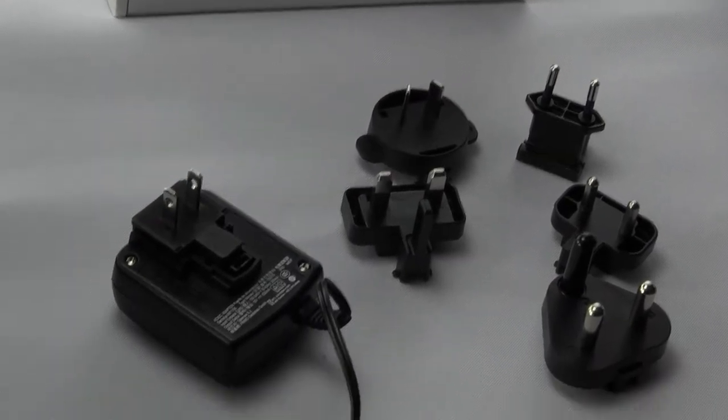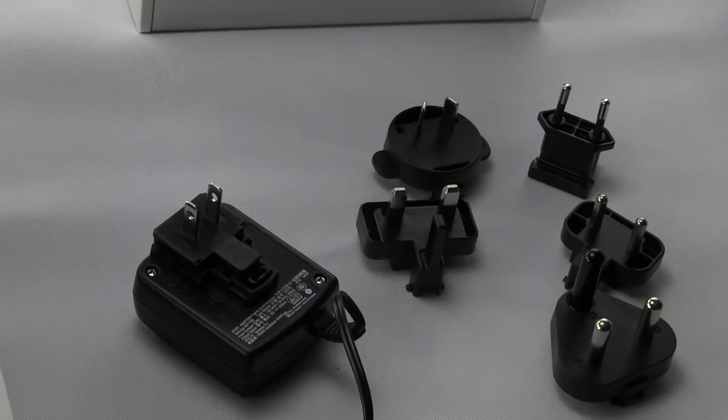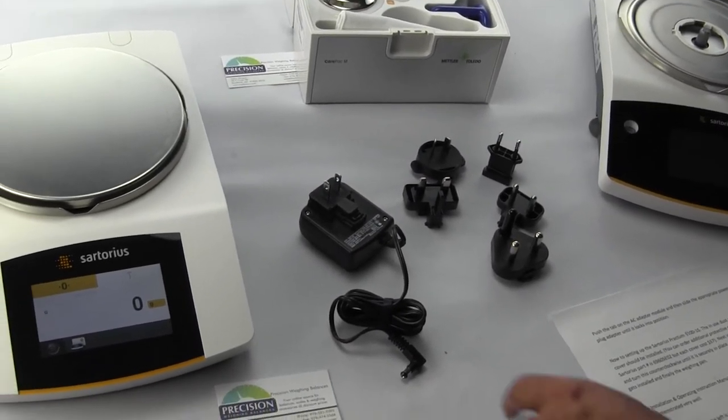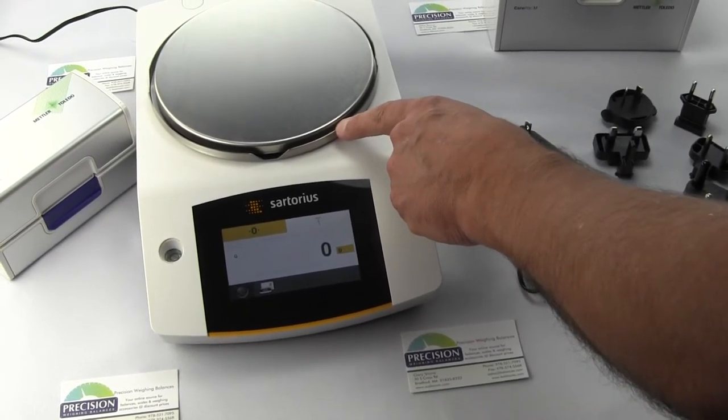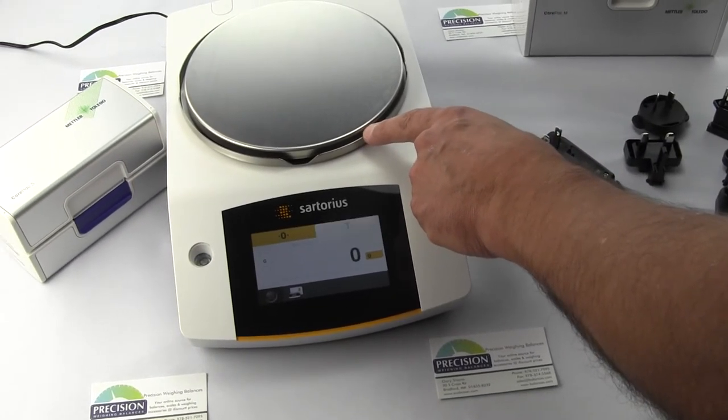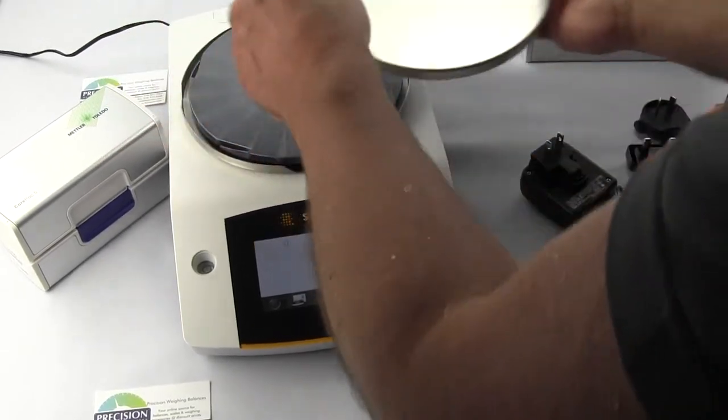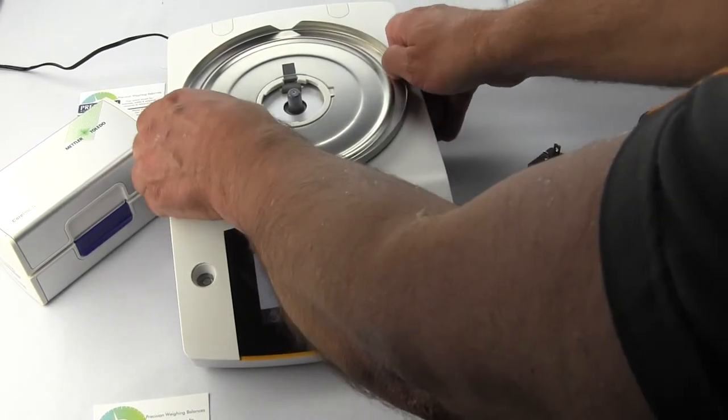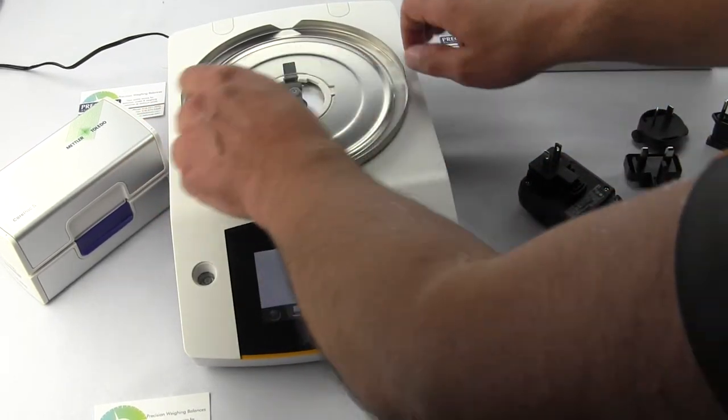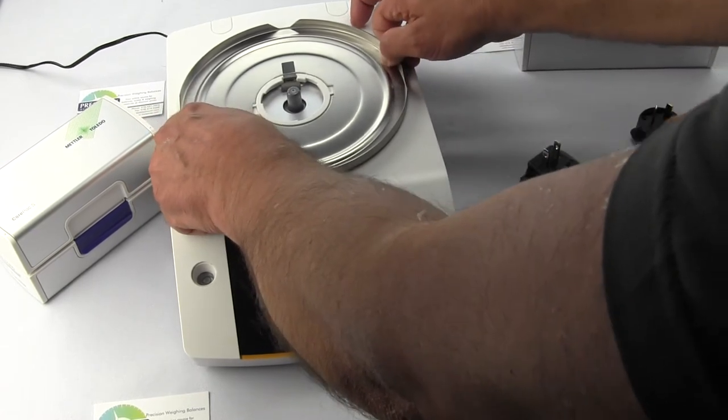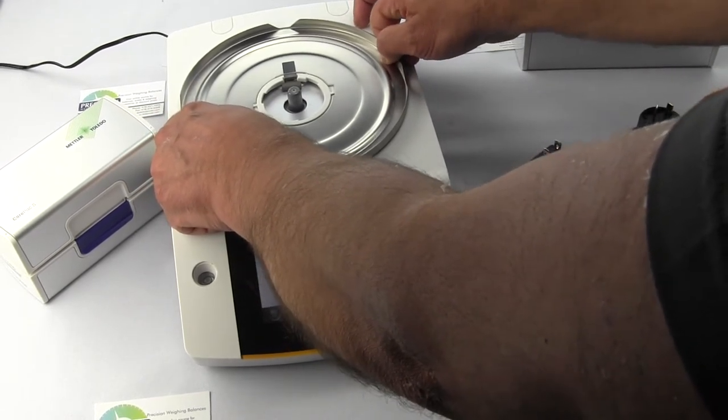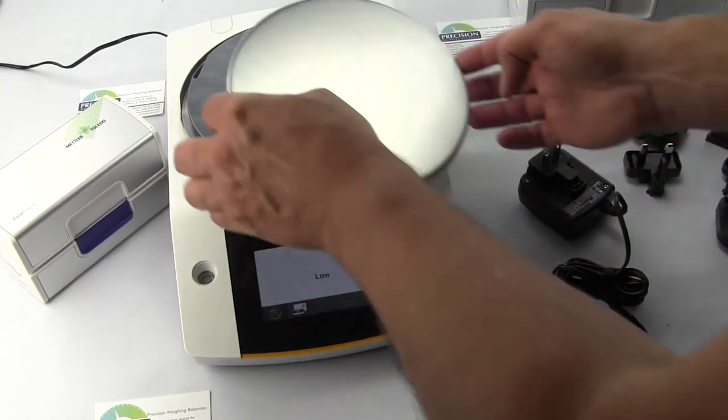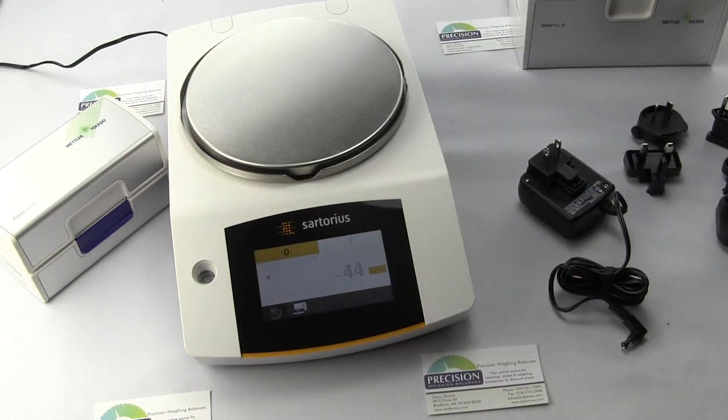For setting up the 5101, we showed you the dust cover and discussed how you can buy additional ones. This is called the shield disc. When you receive your unit you have to install it. On the shield disc you'll see two tabs, so you rotate it counterclockwise until it's snug, then put on the pan support and pan.